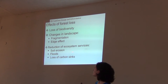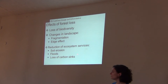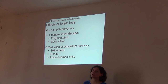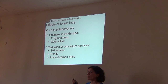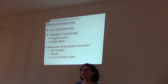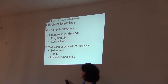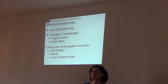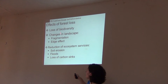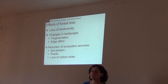Going back to ecosystem services, this is one way to talk about forest cover loss and deforestation — by making reference to the ecosystem services that are lost. We have soil erosion followed by floods, and generally a loss of carbon sinks. One type of ecosystem service is regulating ecosystem services, which includes carbon sequestration. With forest loss, we see a reduction in all of these ecosystem services.